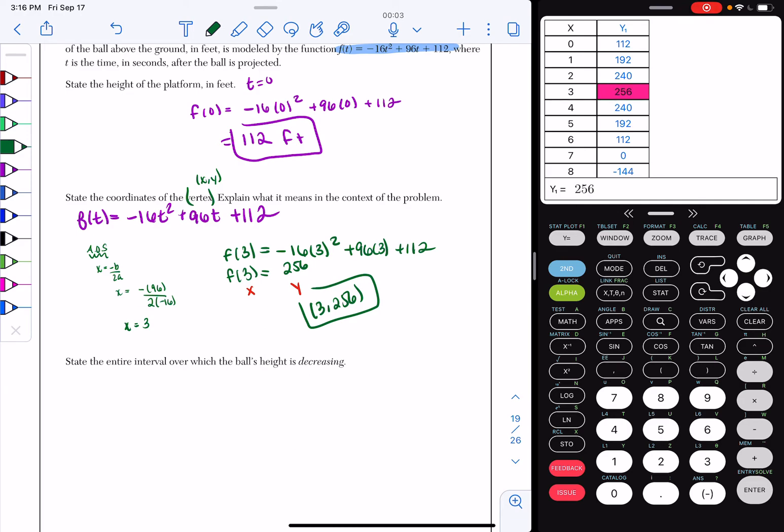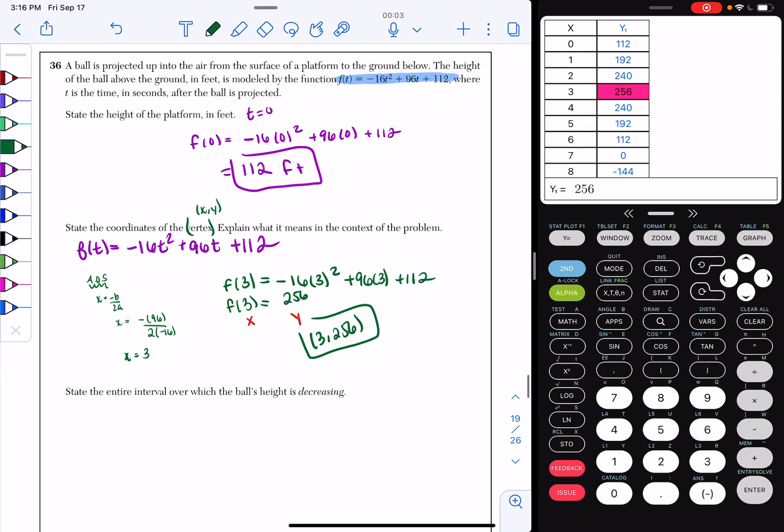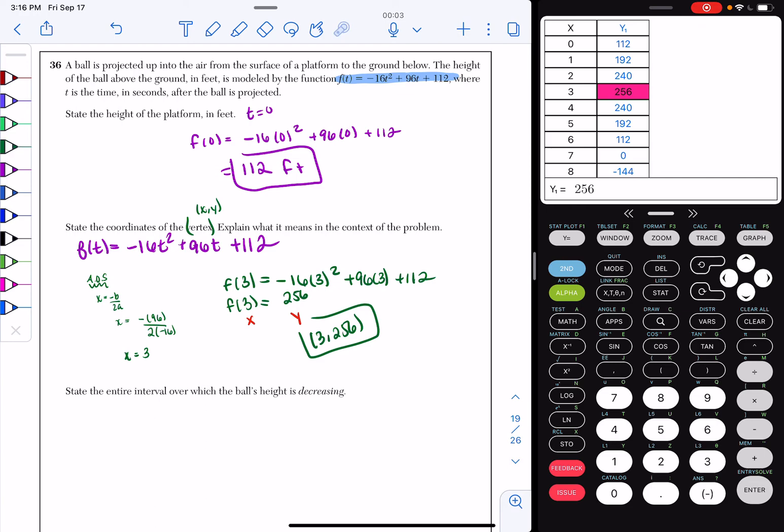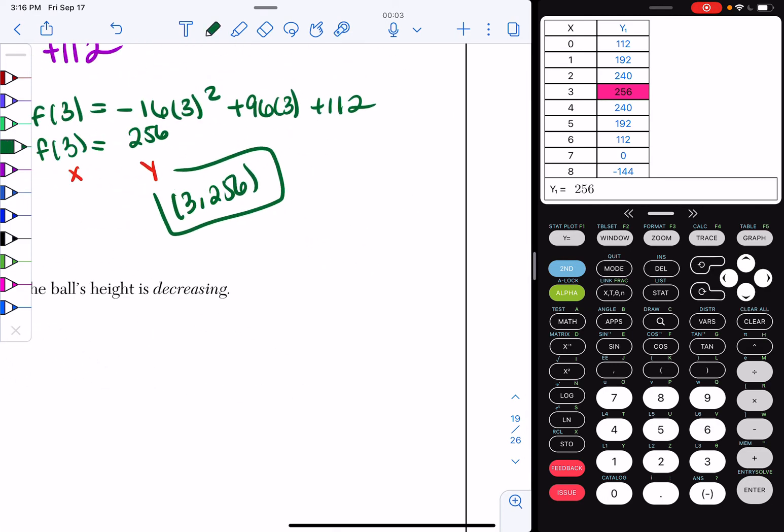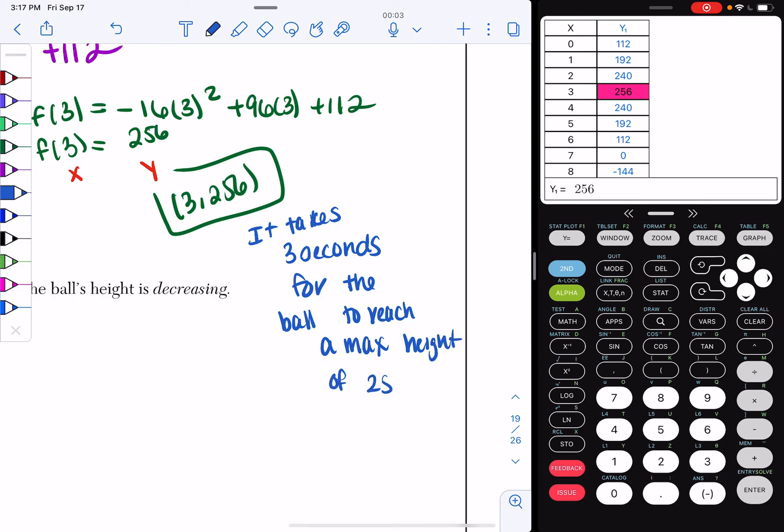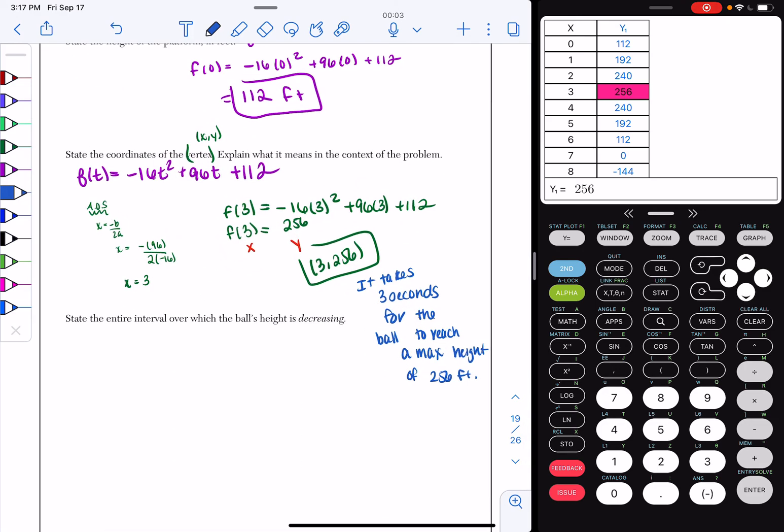Now, it's asking you, what does it mean in the context of the problem? So, basically, I know that t is time in seconds, and that's my x value. So, this right here means it takes three seconds for the ball to reach a maximum height of 256 feet. So, it takes three seconds for the ball to reach a max height of 256 feet. And that would be your final answer for part B.